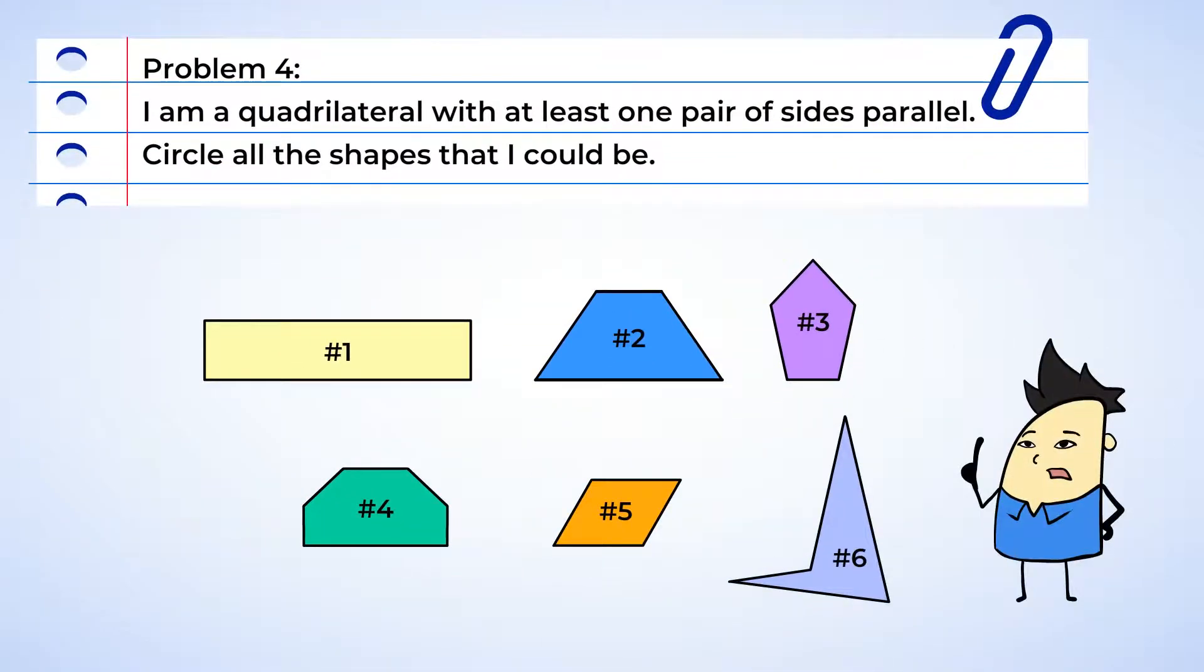I am a quadrilateral with at least one pair of sides parallel. Circle all shapes that I could be. Ooh, a riddle! This is going to be fun. Alright, the first part of the riddle reads, I am a quadrilateral. And that means we're looking for shapes with four sides.